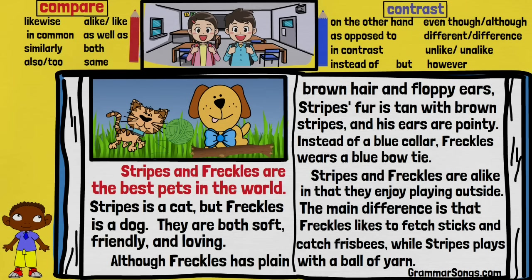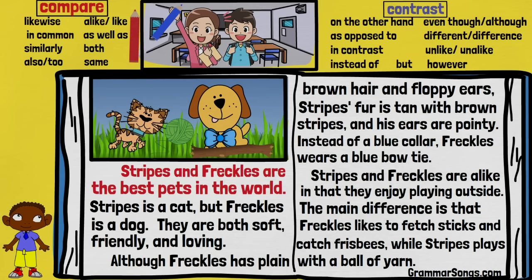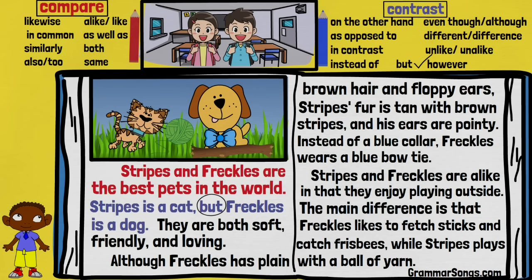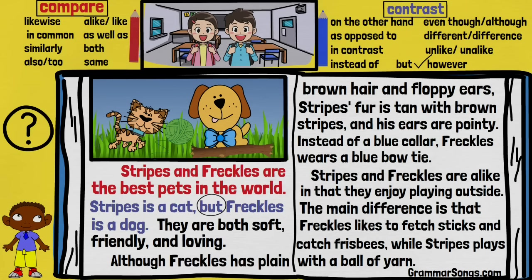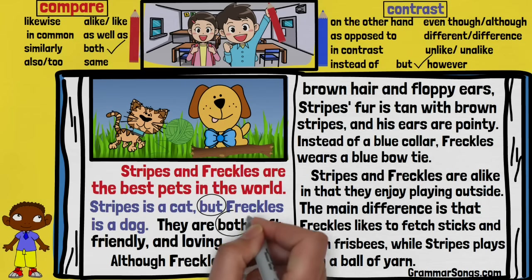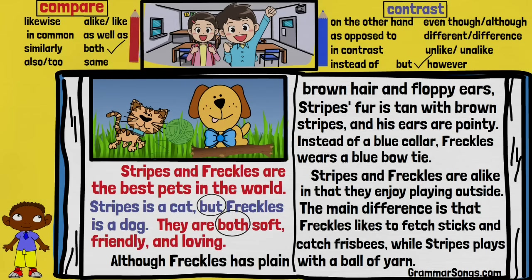'Stripes is a cat, but Freckles is a dog.' This statement is contrasting Stripes and Freckles — I see the signal word 'but!' They are different because one is a cat and the other is a dog. 'They are both soft, friendly, and loving.' This is comparing — I see the signal word 'both.' They are the same because they are soft, friendly, and loving.